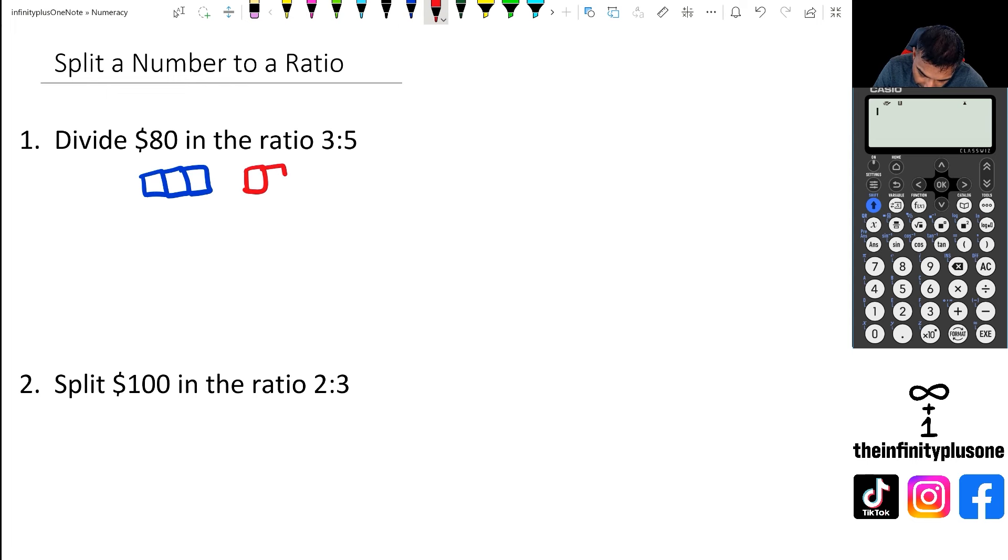So if we think about it like this, we've got three to five, so I'm going to turn the three into three boxes and the five into five red boxes. If you think about it like this, this entire part from here to here is actually worth 80. If you count the number of boxes that we have, we've actually got one, two, three, four, five, six, seven, eight boxes and they add up to 80.